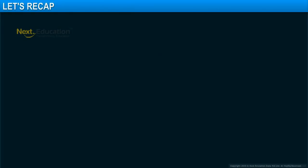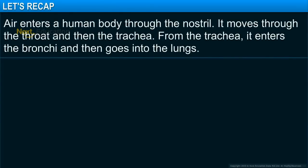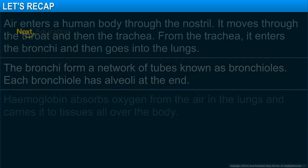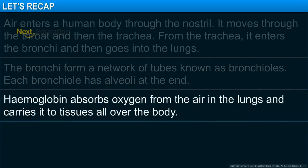In this module, you learned that air enters a human body through the nostrils. It moves through the throat and then the trachea. From the trachea, it enters the bronchi and then goes into the lungs. The bronchi form a network of tubes known as bronchioles. Each bronchiole has alveoli at the end. Hemoglobin absorbs oxygen from the air in the lungs and carries it to tissues all over the body.